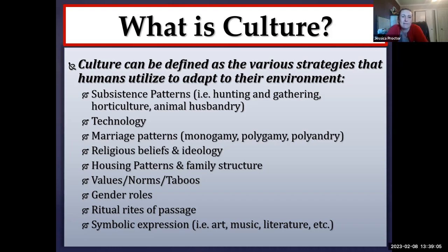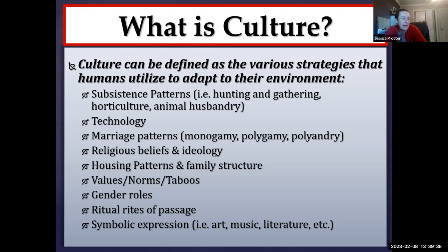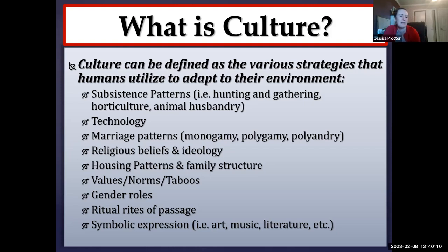A taboo would essentially be the opposite of a value. A norm is behavior that is considered normal — and normal behavior may differ depending on the circumstance. For example, normal behavior here in the Zoom room is different from a physical classroom, or a nightclub, or a library, or a wedding. Taboo is essentially forbidden behavior — behavior for which you would receive some sort of negative sanction. For instance, it was once considered taboo to wear white to a wedding unless you were the bride.